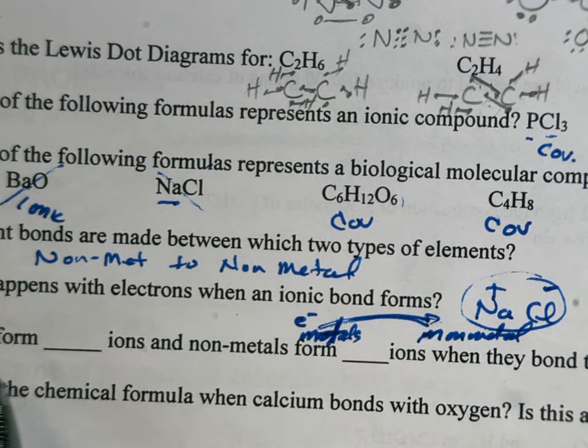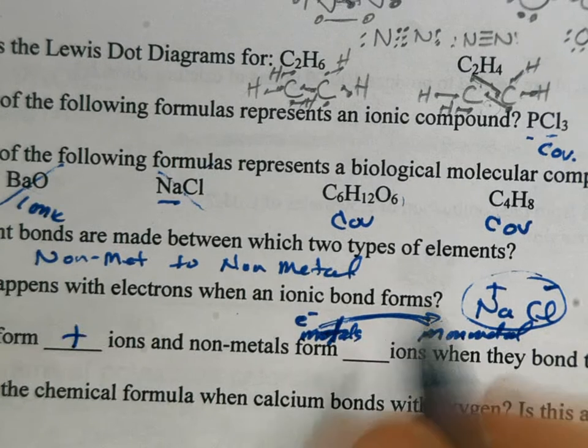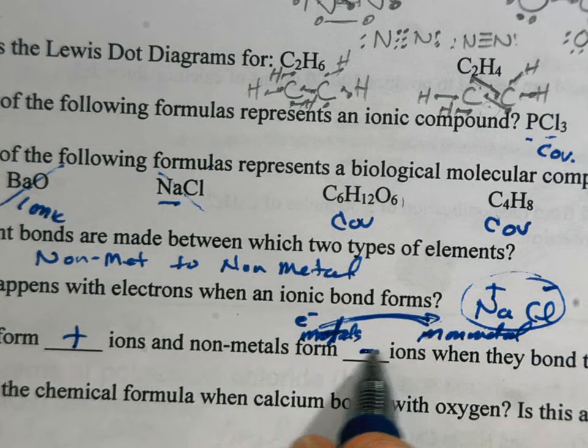Number 35, metals form positive ions. Non-metals form negative ions.